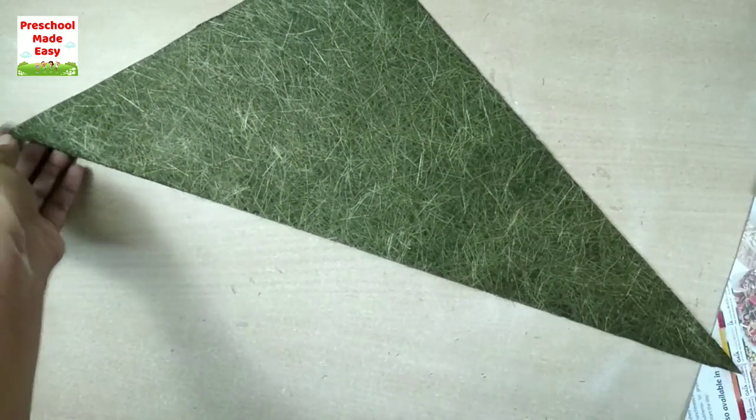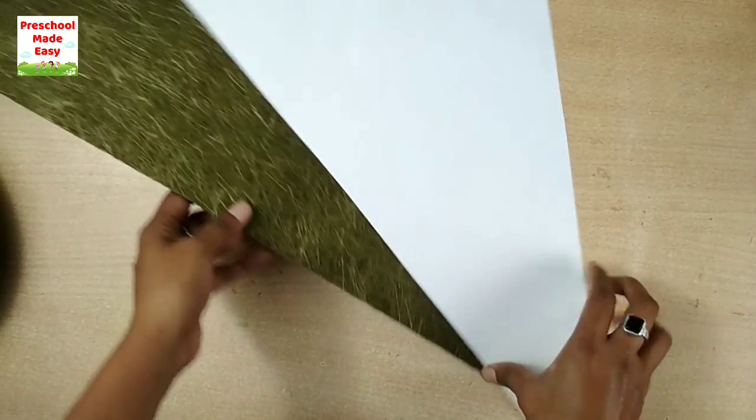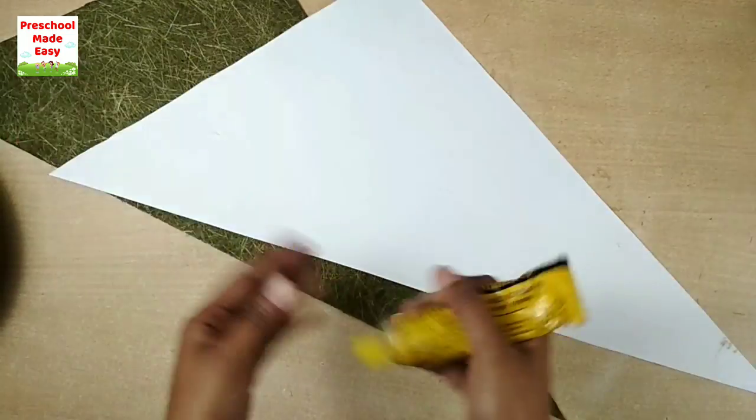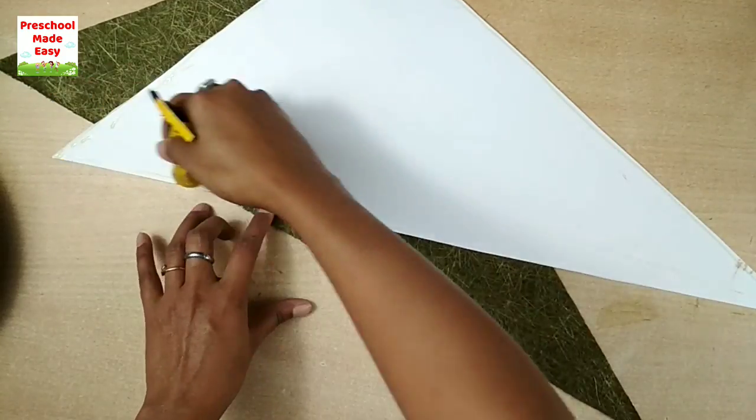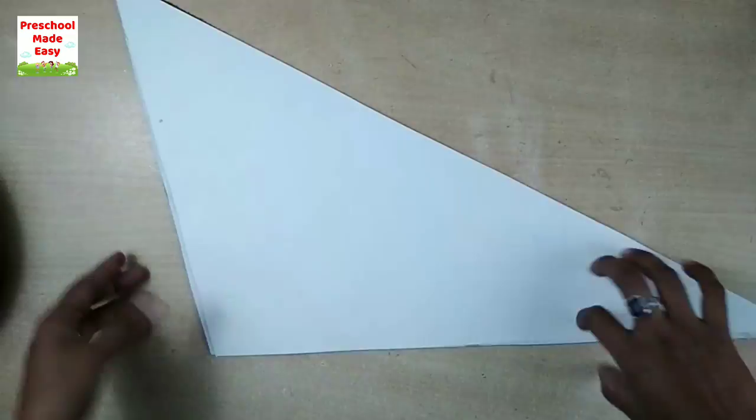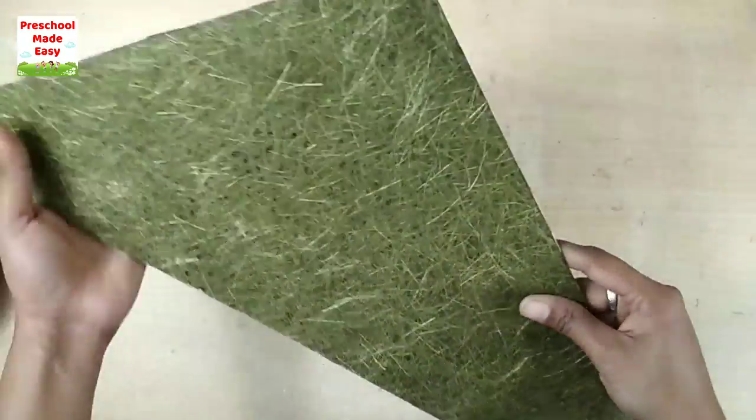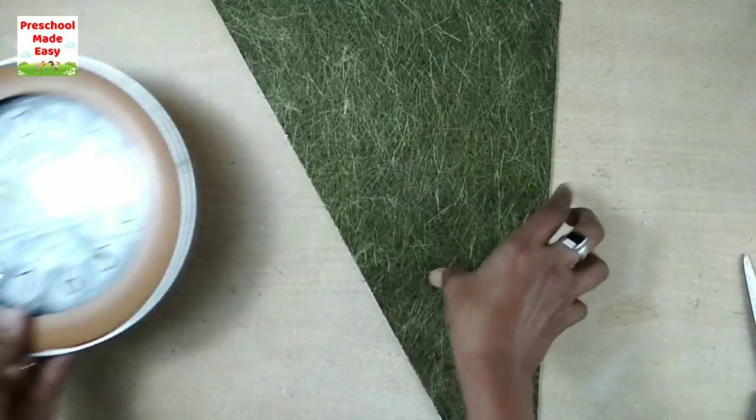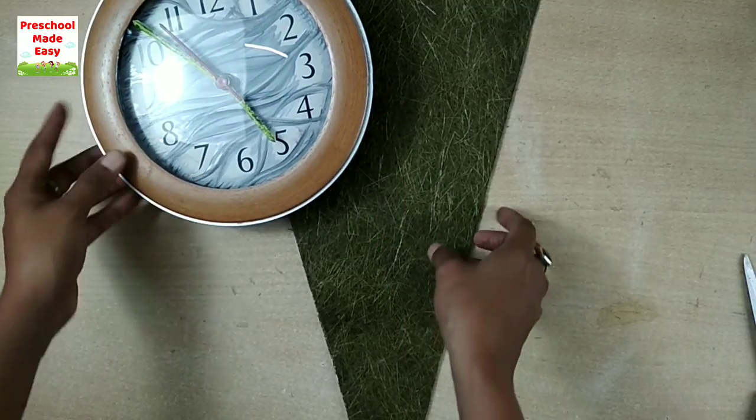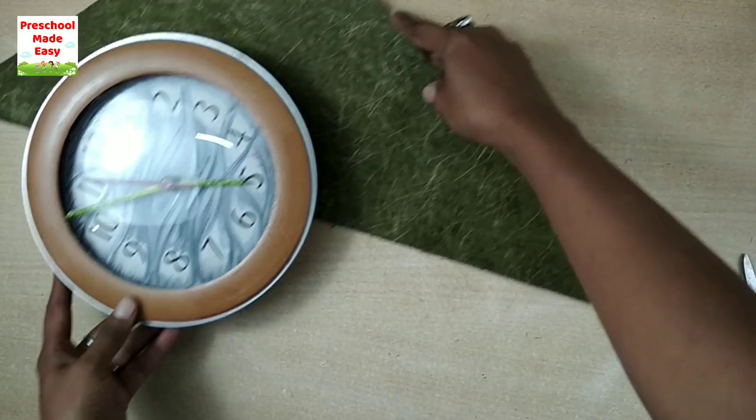This is looking good so far. To make my work neat, I am sticking a paper of the same size on the back side of this paper. Now I will stick this on the back side of the clock.